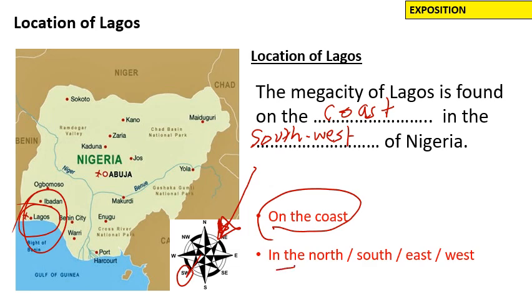When we refer to compass points we say in the north, in the south, in the east, in the west. And in this case, the megacity of Lagos is found on the coast in the southwest of the African country of Nigeria.